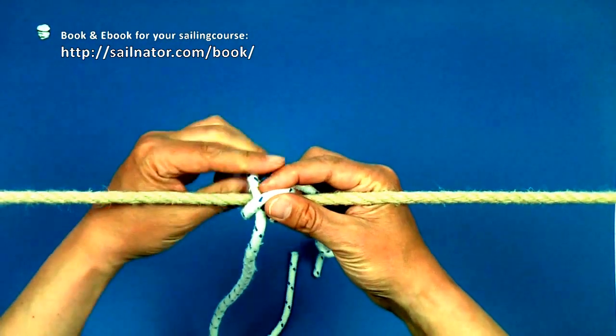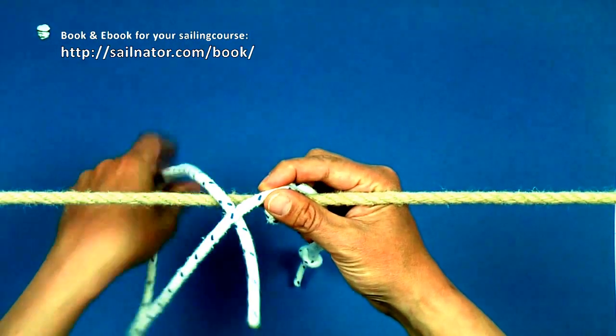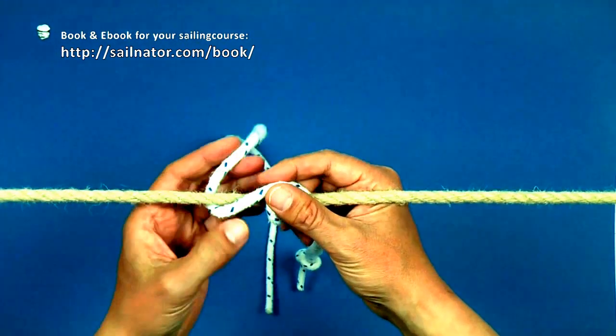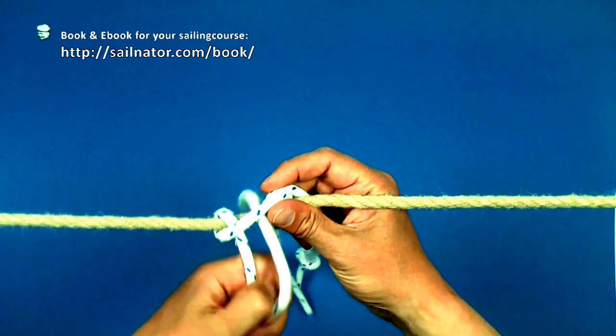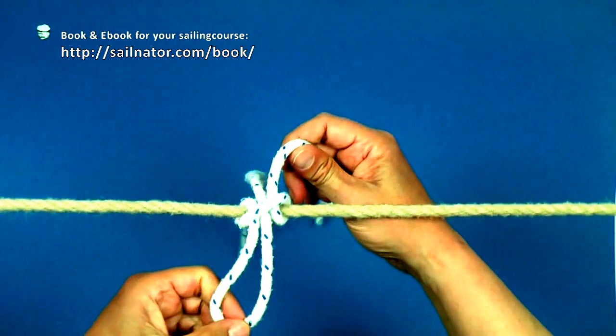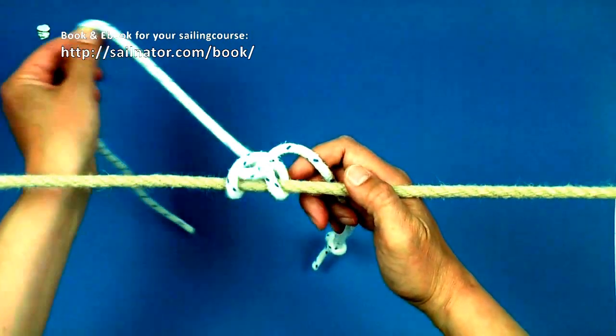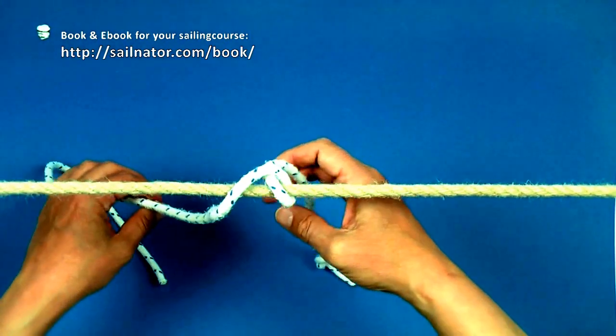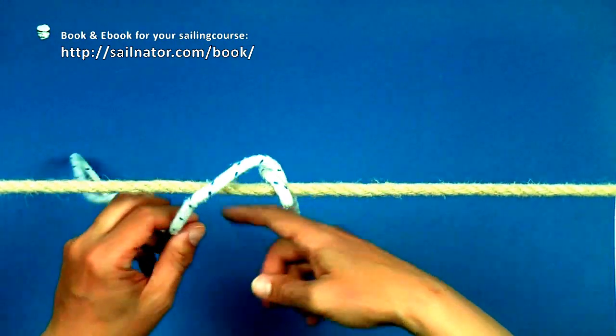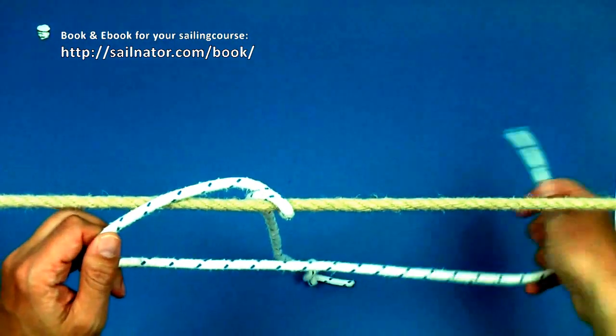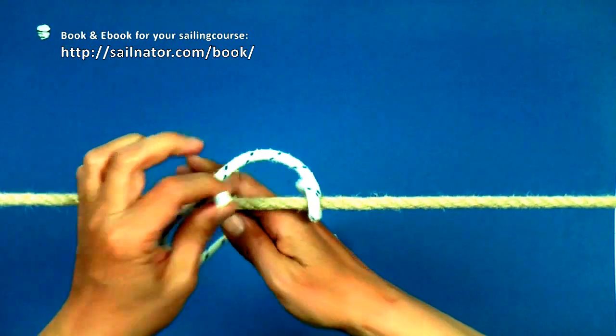We can tie the clove hitch on slip too. Instead of the end of the line I push a bight underneath the crossing line. We can open the knot faster by tying it this way but we have to anticipate losing the fender. Especially when the fender reaches the water surface and is hit by swell the knot might open by itself.